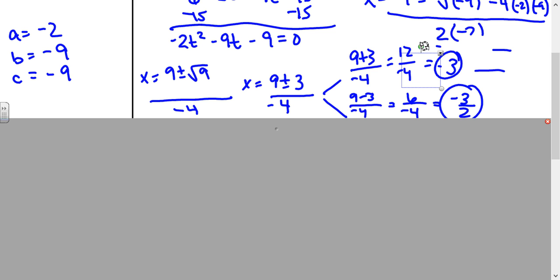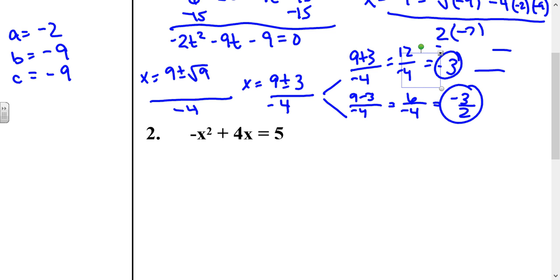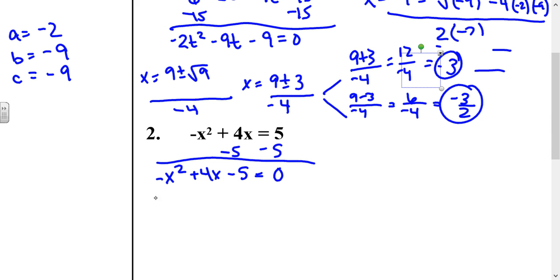Since these are all regular numbers, I can work this out into two different answers: 9 plus 3 over negative 4 gives 12 over negative 4, which equals negative 3; and 9 minus 3 over negative 4 gives 6 over negative 4, which reduces to negative 3 halves. So my answers are x equals negative 3 and x equals negative 3 halves. For the next example, I want it to equal 0, so I subtract 5 from both sides, giving negative x squared plus 4x minus 5 equals 0. Because there's a negative sign in front of x squared, I would take negative 1 times negative 5, which is positive 5, and find factors of 5 that add to 4 — but the only factors are 1 and 5, which add to 6, so that's not possible. I would have to use the quadratic formula.